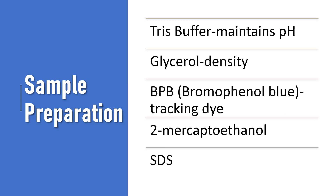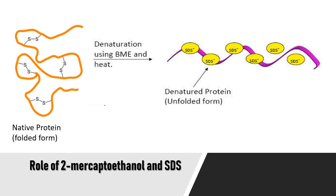For carrying out SDS-PAGE, the protein samples are prepared using Tris buffer, which maintains the pH; glycerol, which gives the sample enough density so that it can settle inside the well; bromophenol blue, which is used as a tracking dye; 2-mercaptoethanol; and SDS.